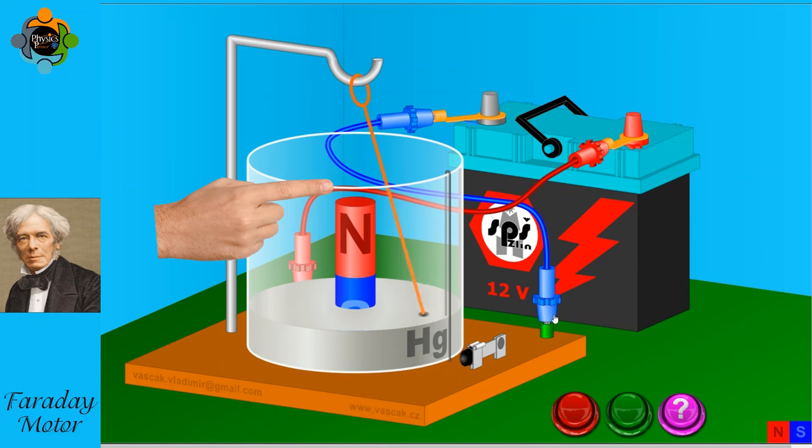The wire was then arranged in such a way that one end was immersed in the mercury bath. The current from the attached battery ran through the circuit. As the current ran through the circuit, a circular magnetic field was generated around the wire.